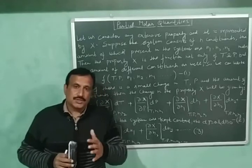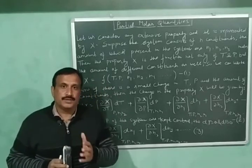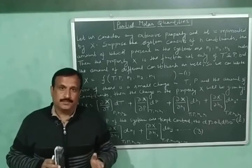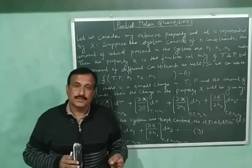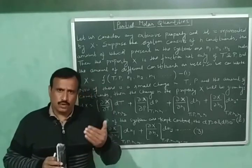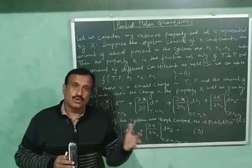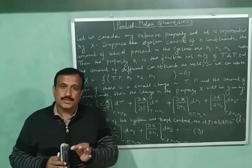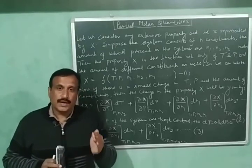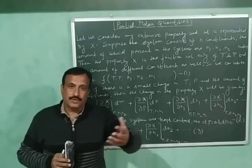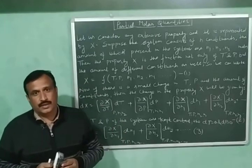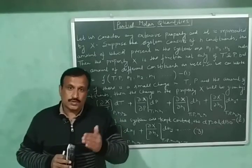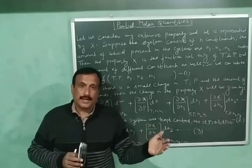During discussion of various thermodynamic properties, it was supposed that the system is a closed system. In a closed system, the mass, composition, or the number of moles remains constant, because there is no exchange of mass between the system and the surroundings. The variation of thermodynamic properties was studied with respect to temperature and pressure only.